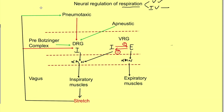This completes the flowchart for involuntary neural control of respiration. For voluntary control, information travels from the cerebral cortex via the corticospinal tract to the alpha motor neurons of the inspiratory and expiratory muscles, allowing voluntary control of respiration.